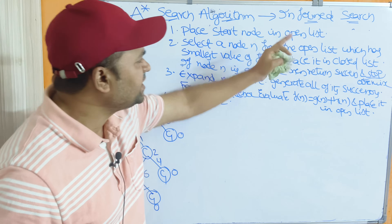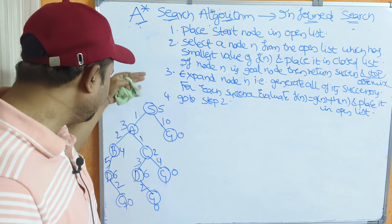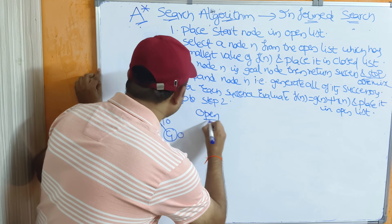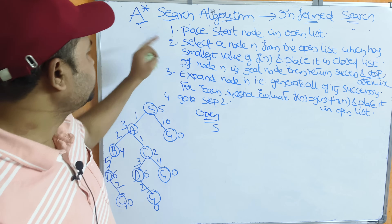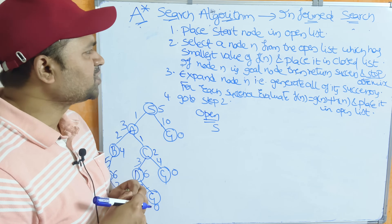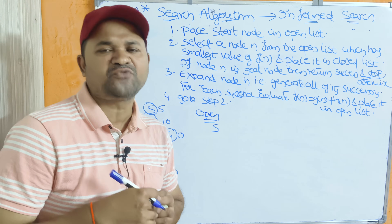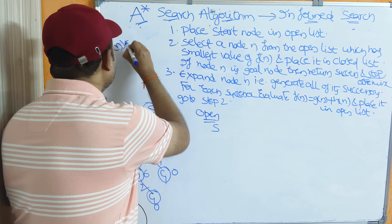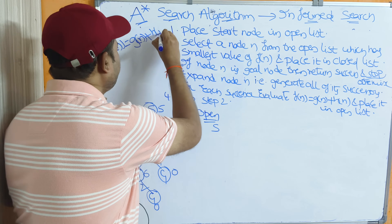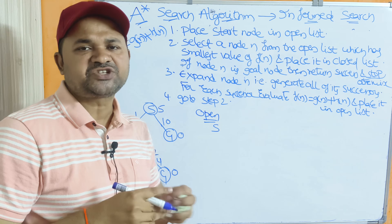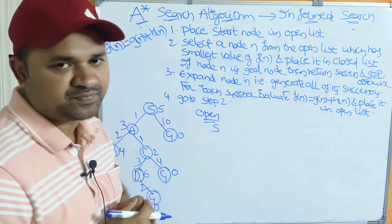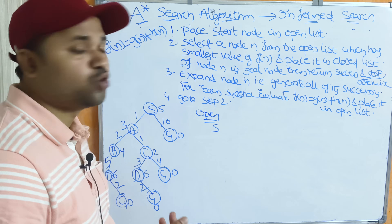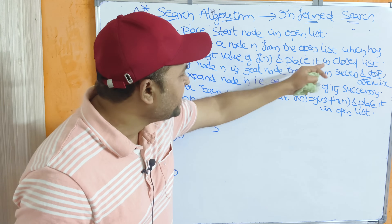Step 1: Place the starting node in the open list. If we take this graph, S is the starting node, so we place it in the open list. Step 2: Select a node n from the open list which has the smallest value of f(n). For each node, calculate f(n) = g(n) + h(n), where g(n) is the cost from start node to node n, and h(n) is the heuristic value — the cost from node n to the goal node. Then place that node in the closed list.